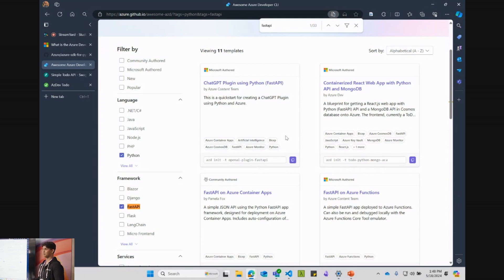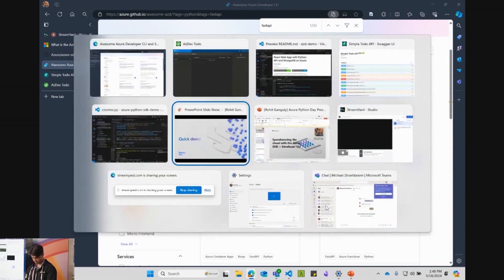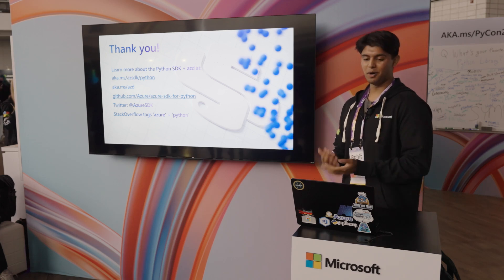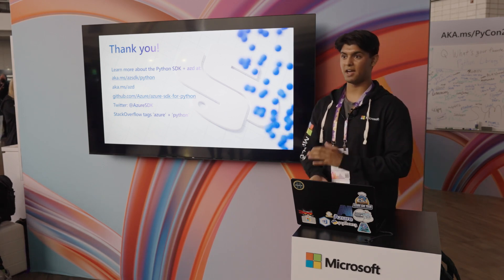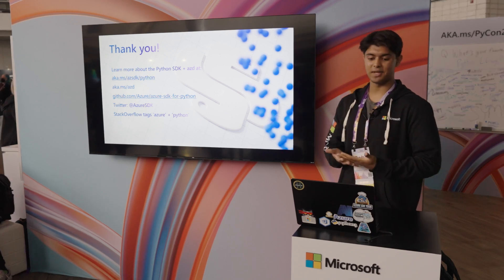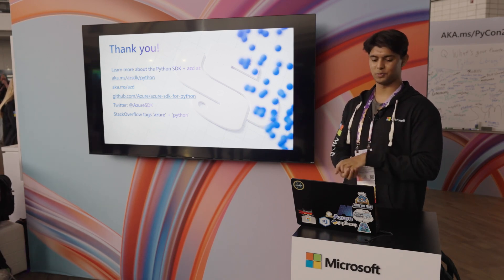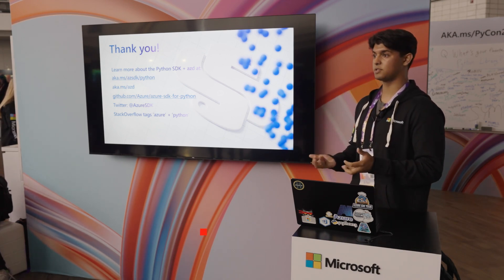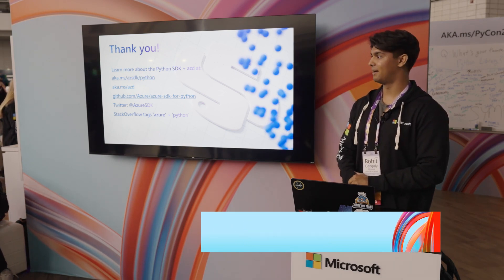So from here, we can really call this a speedrun of the cloud — all resources provisioned and the application deployed super quickly, with native Python code to talk to the services for more complex scenarios. You can learn more about the Python SDK and AZD at aka.ms/azsdk/python. For the Azure Developer CLI, that's aka.ms/azd. Check us out on GitHub at github.com/Azure/azure-sdk-for-python. We have an account on X (formerly Twitter) at Azure SDK. And if you have questions about putting your Python apps on Azure, we check Stack Overflow with the tags Azure plus Python.